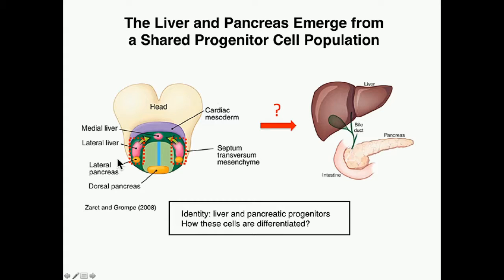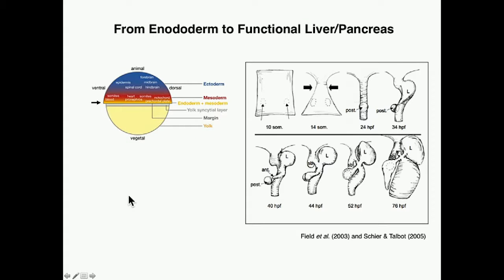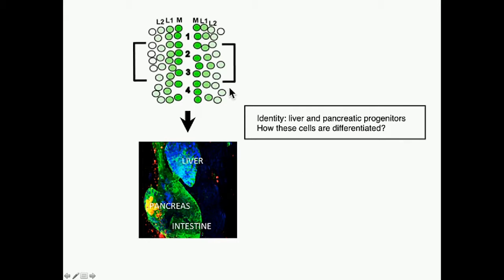The next slide shows the endodermal development of the liver and pancreas from the endoderm. Starting from the blastula stage mesoendoderm, progressing to the endodermal layer, these cells eventually become mature liver and pancreatic cells. Based upon these developmental processes, we used zebrafish to tackle these questions, focusing on approximately the 6 to 8 somite stage endodermal layers.